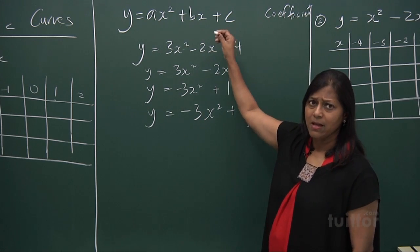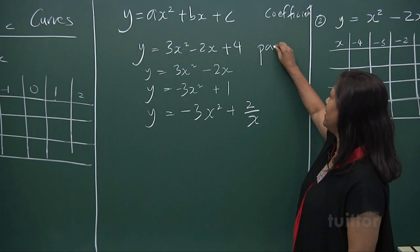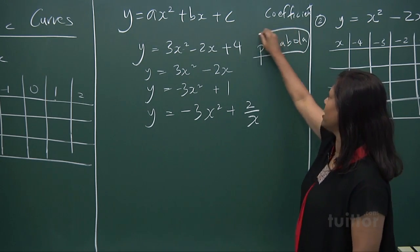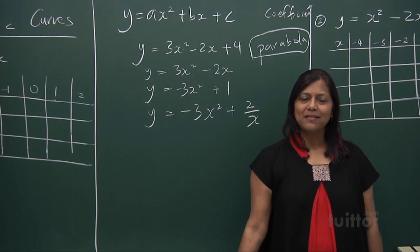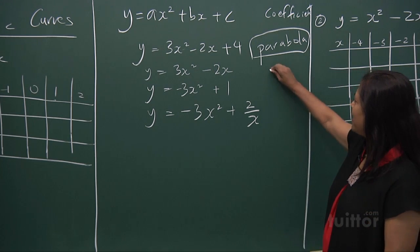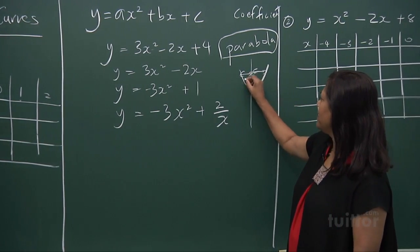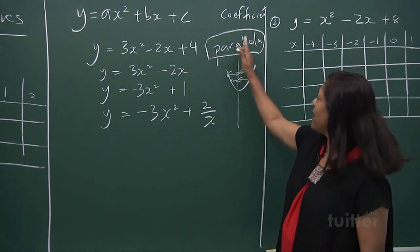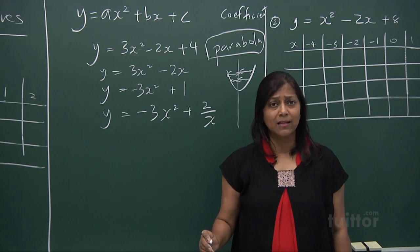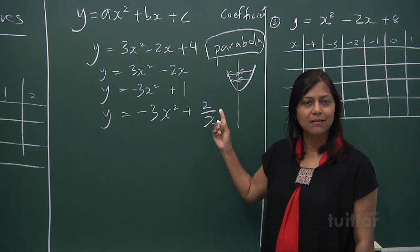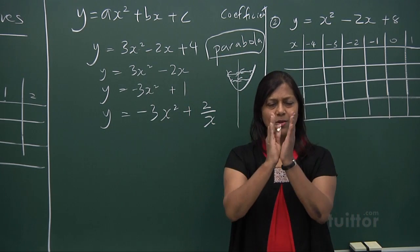A quadratic equation always takes the shape of a parabola. A parabola takes the shape of a U. There is a line of symmetry where this distance equals this distance — any point on one side mirrors the other. When you fold the curve, it overlaps point to point. A quadratic curve has this very significant property: the line of symmetry divides it into two equal parts.